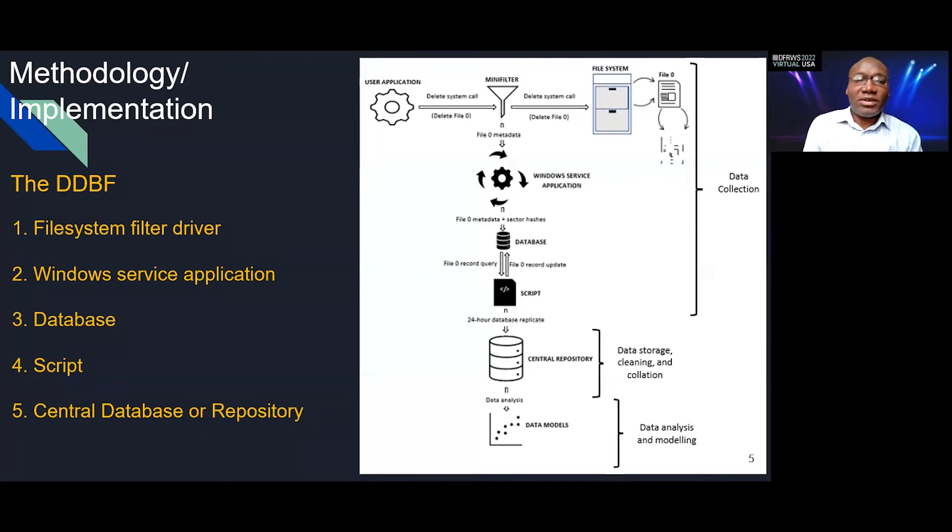Now this is the methodology and as well as the implementation. The tool that we have developed has five components: a file system filter driver, also called the mini filter; a Windows service application, which is a long-running application without the user interface that runs in the background so it does not interfere with the user's ability to use the system; a database implemented in SQLite; a Python script that is compiled into a program; as well as a central database or repository that is developed using AWS S3 bucket.